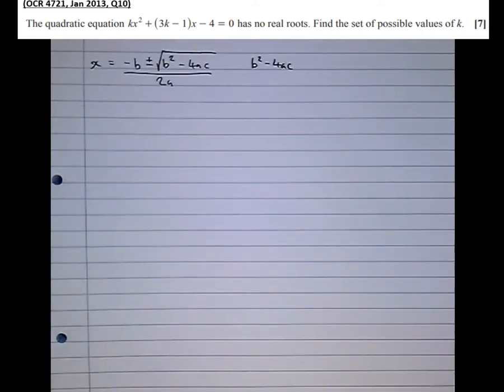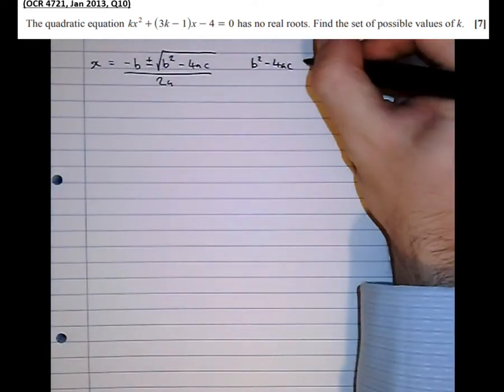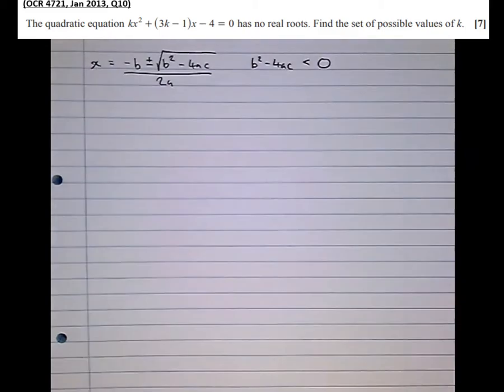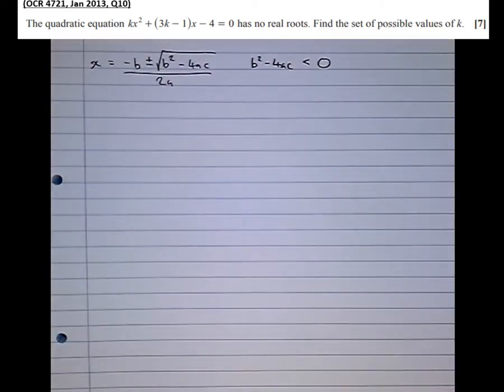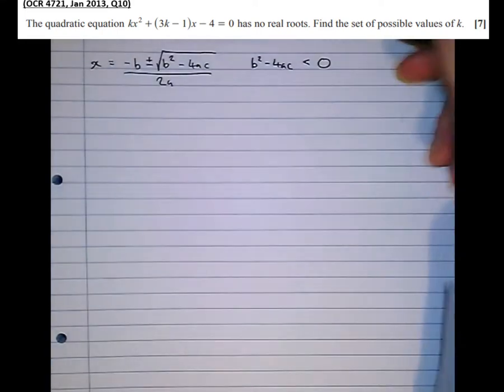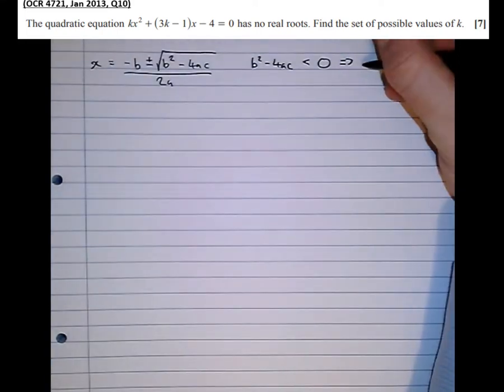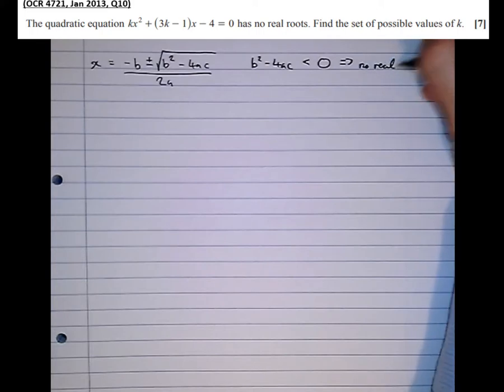And when solving quadratic equations there's three main scenarios that can arise. The bit under the square root sign could be less than zero. So what that means is we're trying to square root a number that's negative. If a number is less than zero it's negative. So if what's under the square root sign is negative we can't do that. There's no real solutions to that. So that means the quadratic equation has no real roots.